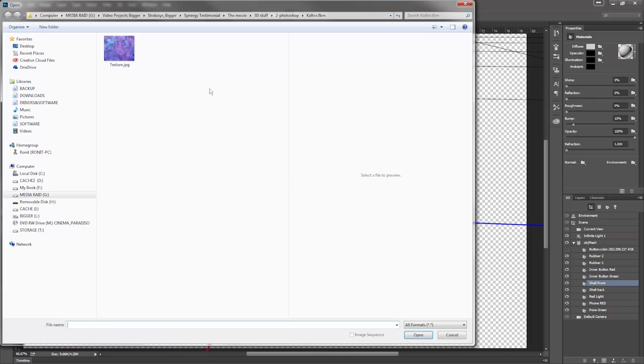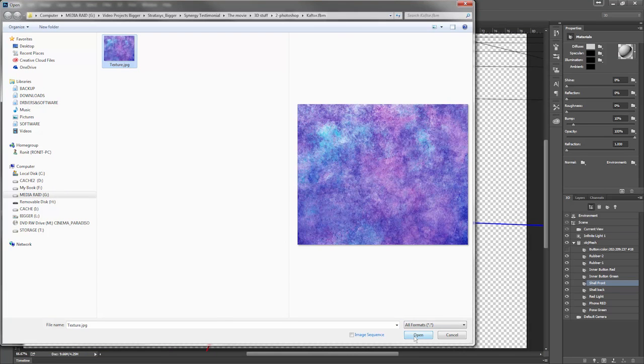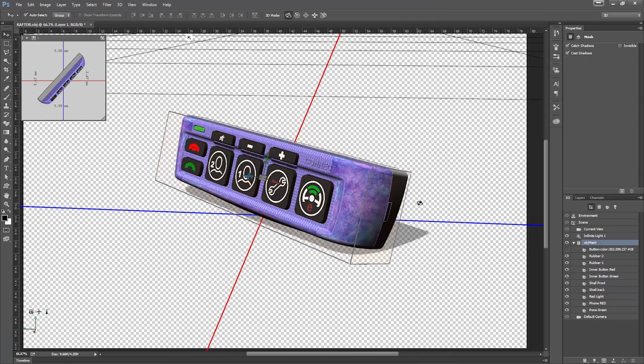I can take a CAD file from SOLIDWORKS for example, just throw the texture in there and the graphics, and I know that in a few hours I will get a prototype that I can touch and feel.